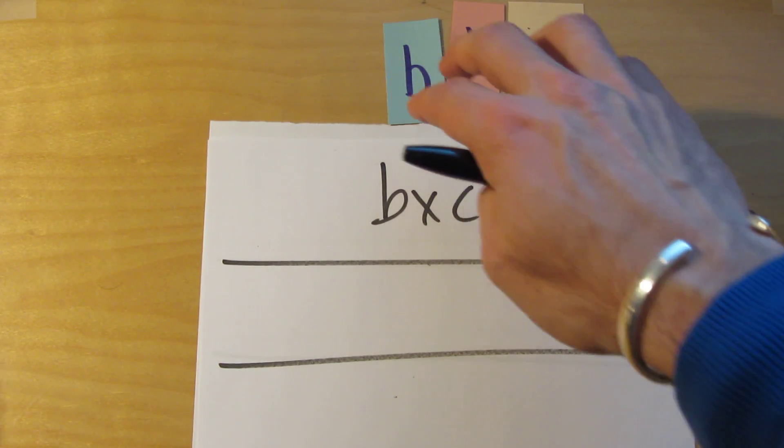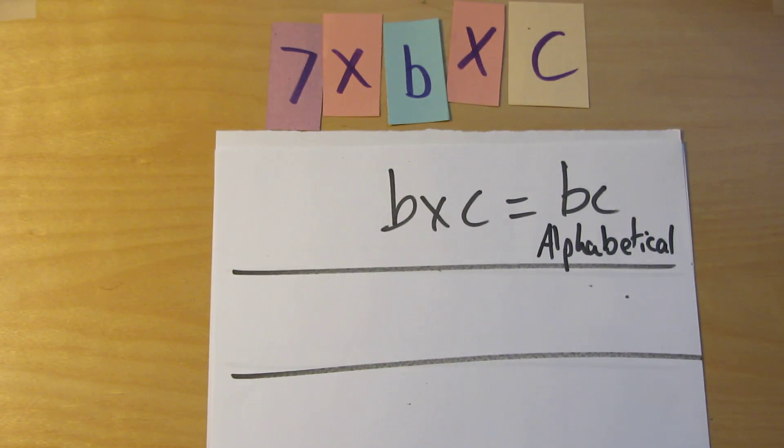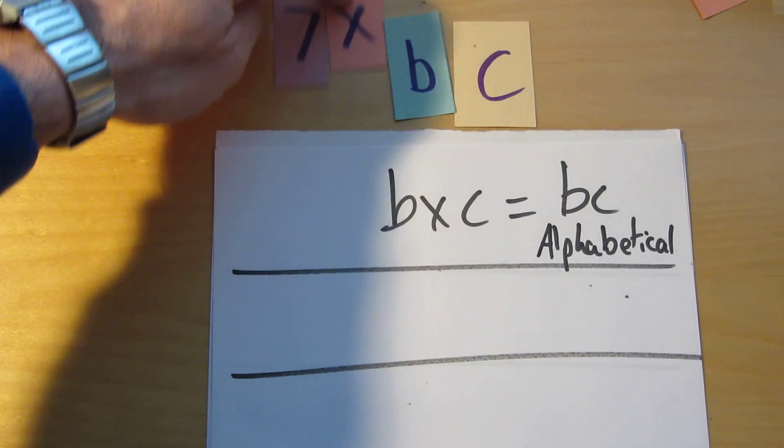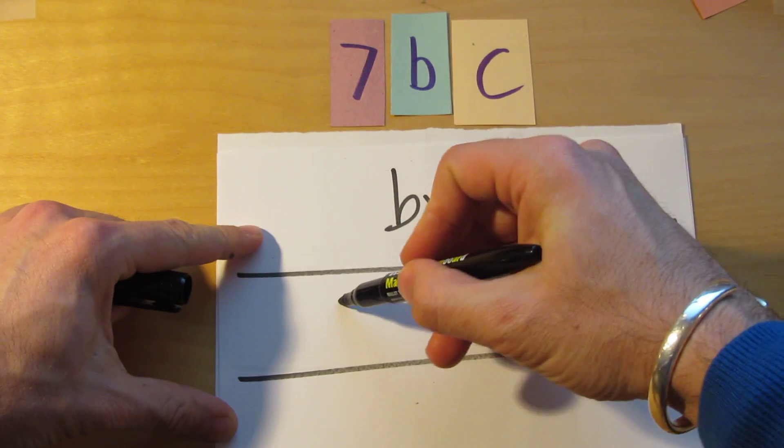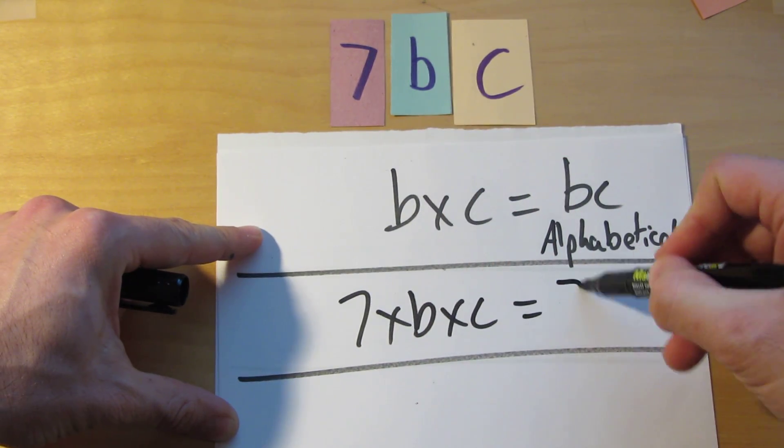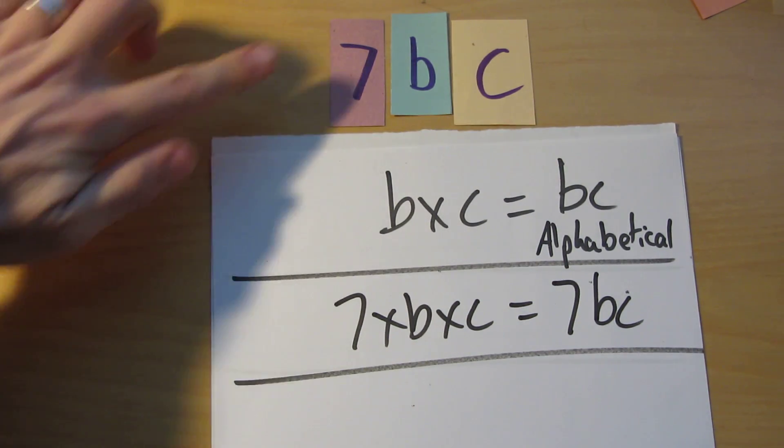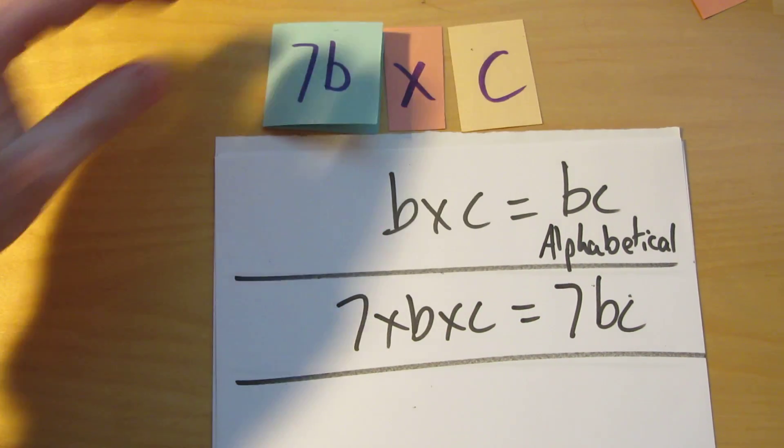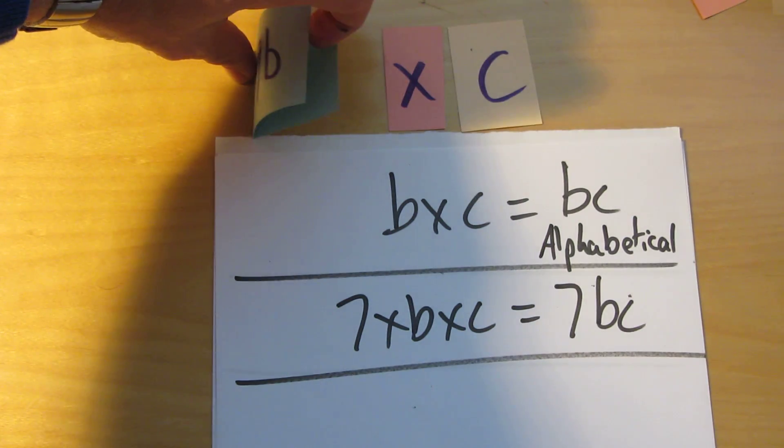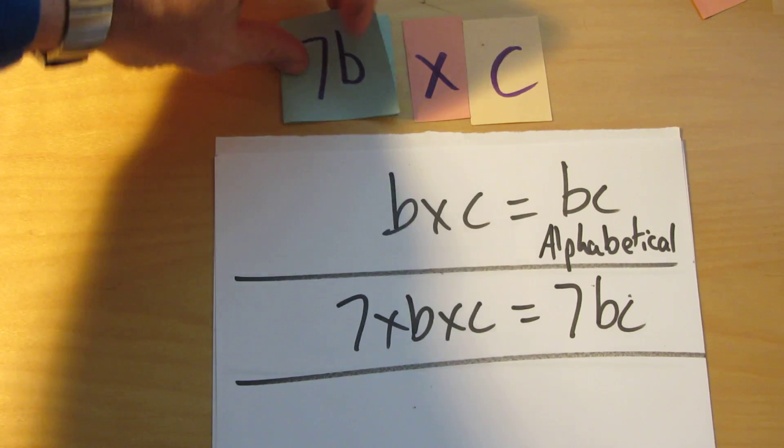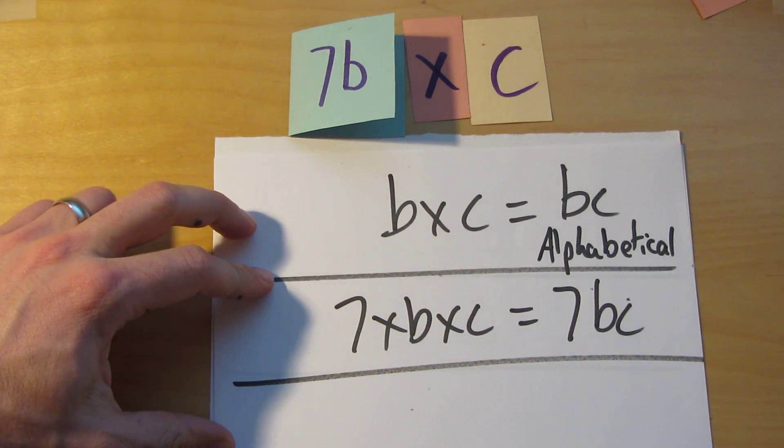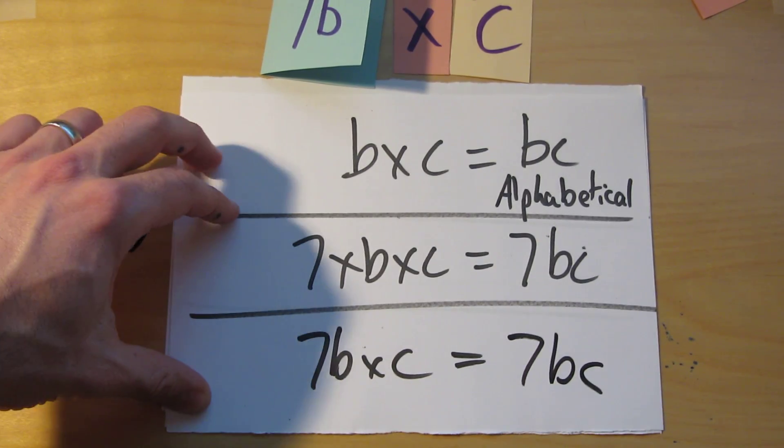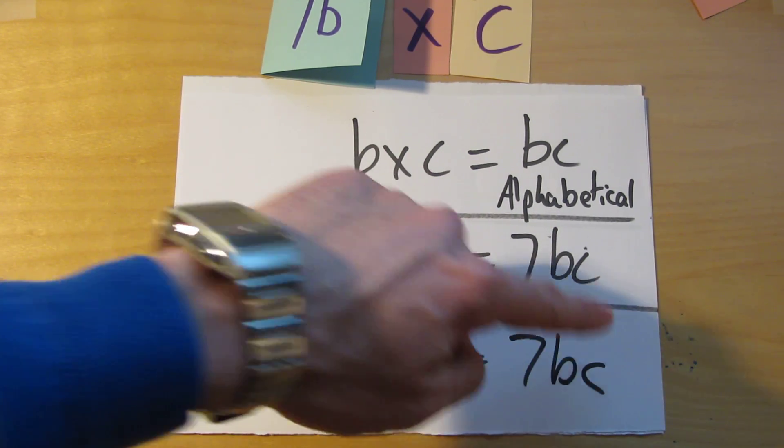Okay so let's just switch that back to how we had it before. b times c simplifies to bc. Now we're going to do 7 times b times c. Well if we said that b times c simplifies to bc like that, we've now got 7 times bc. And 7 times bc simplifies to that. So 7 times b times c simplifies to 7bc. Let's just switch that for 7b. And we'll now do 7b times c. Remember that 7b stands for 7 times b. So 7b times c is also 7bc. And again notice how I'm keeping the variables in alphabetical order.